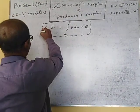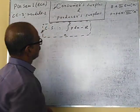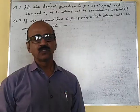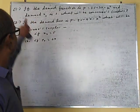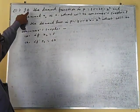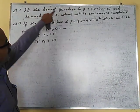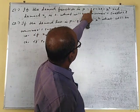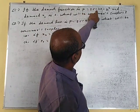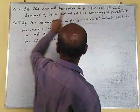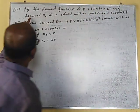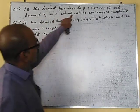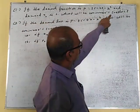Now we will solve a previous consumer surplus problem. Question number 1: if the demand function is P equal to 35 minus 2x minus x square and demand x₀ is equal to 3, what will be consumer surplus?